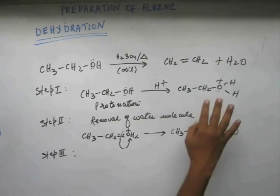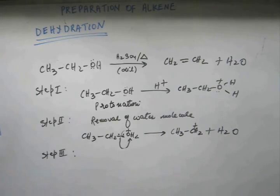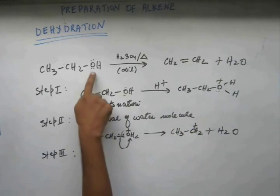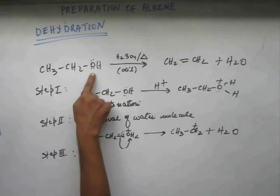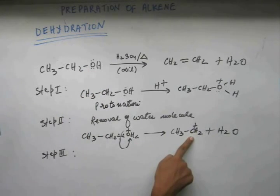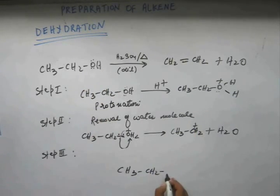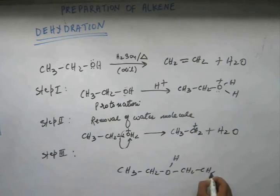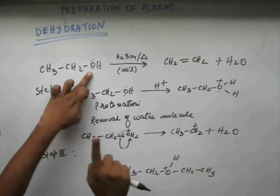There are water molecules being formed but the number of those water molecules will be too few to come and attack on this carbon. There are other alcohols as well, so one possibility would be when this alcohol can come and attack over this plus charge. What you would get is CS3, CS2, and this oxygen will have a plus charge because this oxygen will give its electron to the C plus.